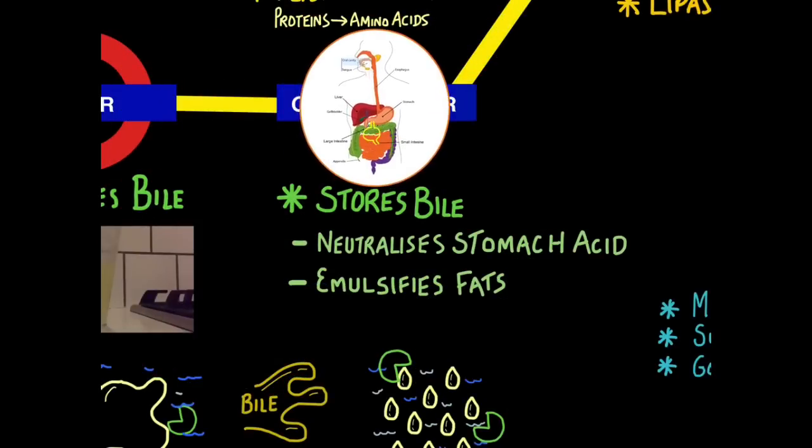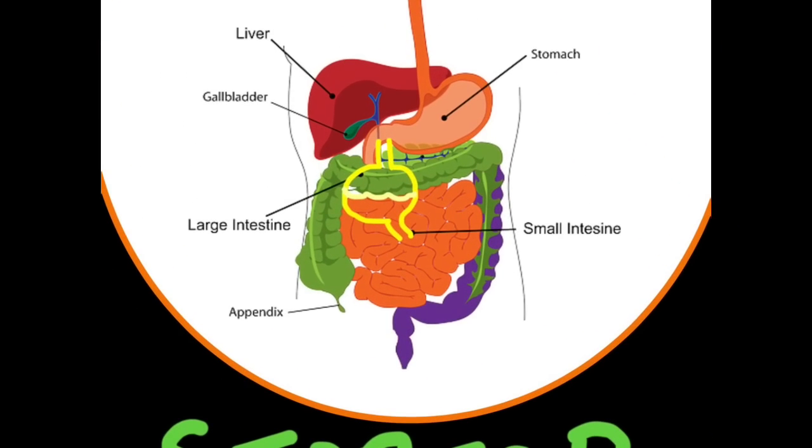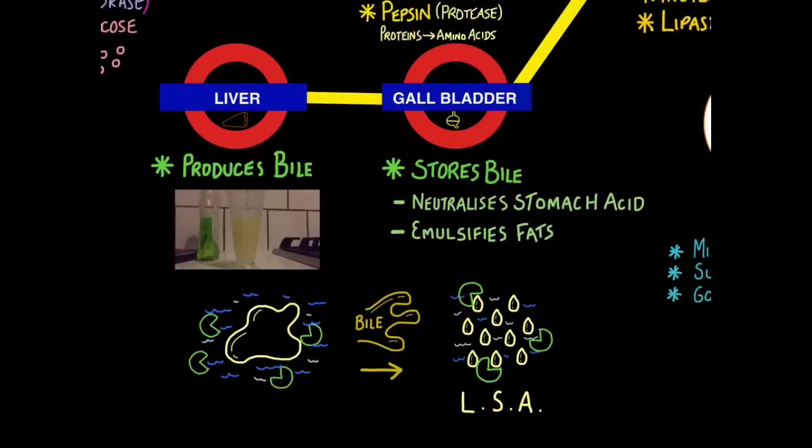Basically, bile breaks down fats to give them a large surface area. The next stop is the gallbladder, where bile is actually stored. You can't see the gallbladder very clearly on this picture, but if you have a look here, it's just there. So remember, the liver produces bile, but the gallbladder stores it. Like your bladder stores urine, the gallbladder stores bile.